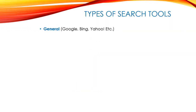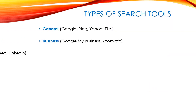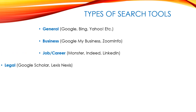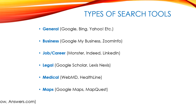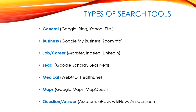Now let's look at different types of search tools. The general search tools we've already mentioned are Google, Bing, and Yahoo, but there are other search engines specific to different uses. For business, there's Google My Business or Zoom Info. For jobs, there's Monster, Indeed, and LinkedIn. For legal, Google Scholar and LexisNexis. For medical, WebMD and Healthline. For maps, Google Maps and MapQuest.